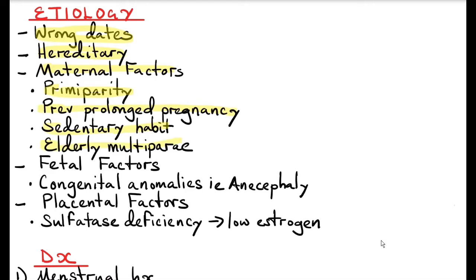The fetal factors that contribute to post-dates are congenital anomalies like anencephaly. This is because there's an abnormal fetal hypothalamic-pituitary-adrenal axis and adrenal hypoplasia, which results in reduced fetal cortisol response to trigger initiation of labor. Placental factors include sulfatase deficiency, which results in low estrogen. Estrogen is important in the initiation of labor as it upregulates oxytocin receptors in the uterus.